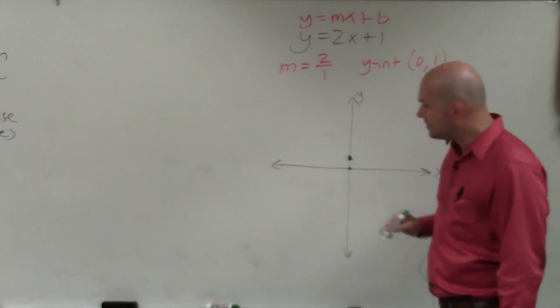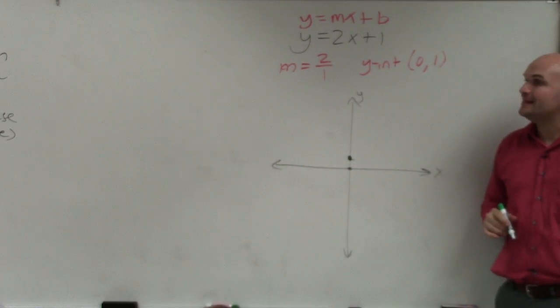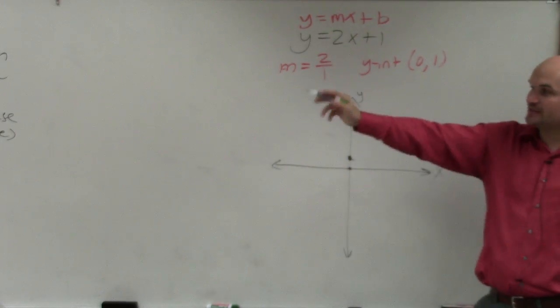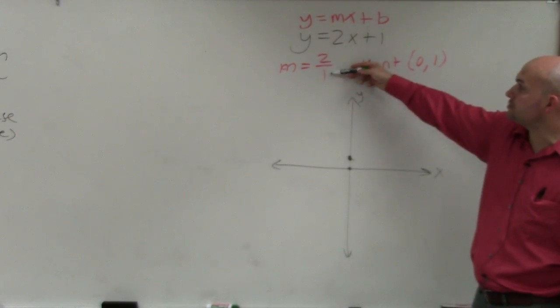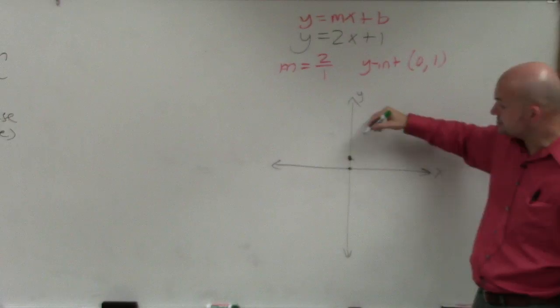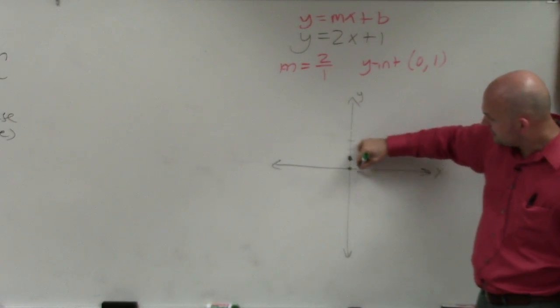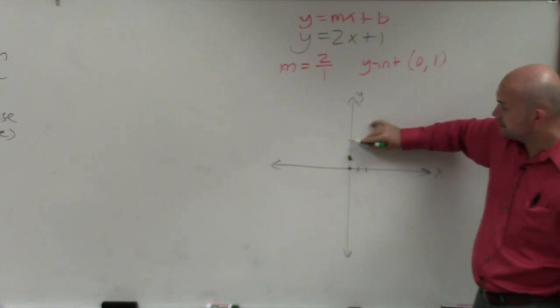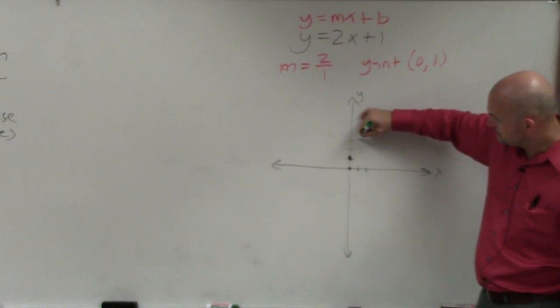So then I use the slope to find any other point that's on the line. So remember, you can think of slope as the change in the y-coordinates over the change in the x-coordinates, or rise over run. So I could go from my y-intercept. I go up 2, because the rise is 2, to the right, 1.